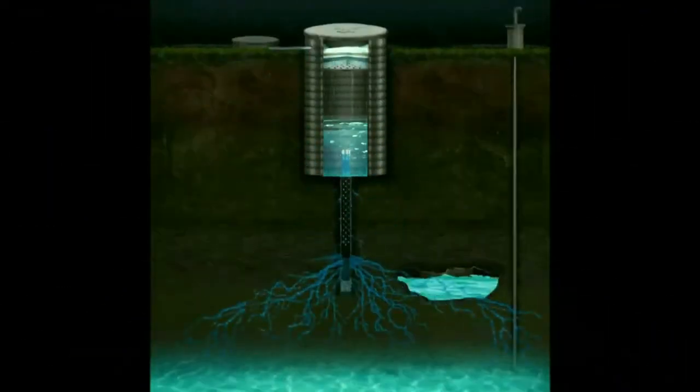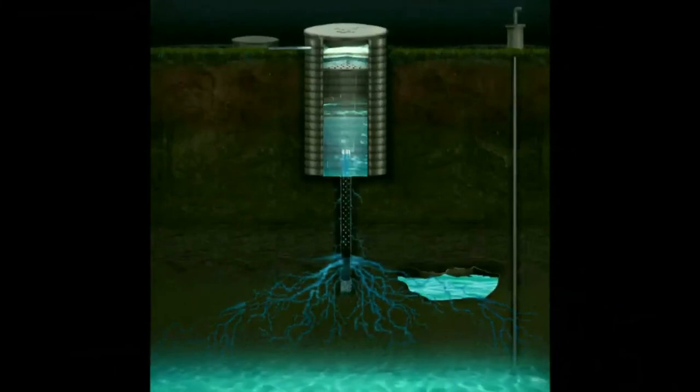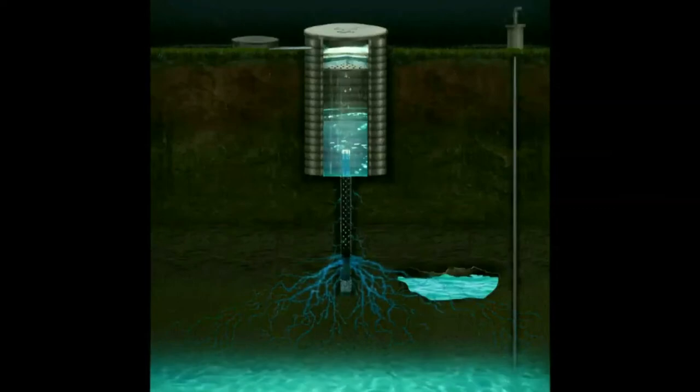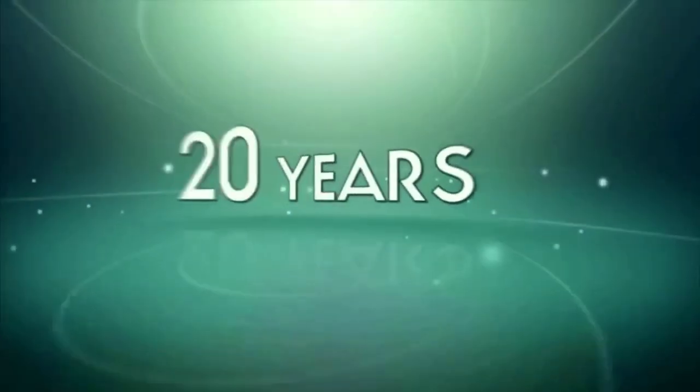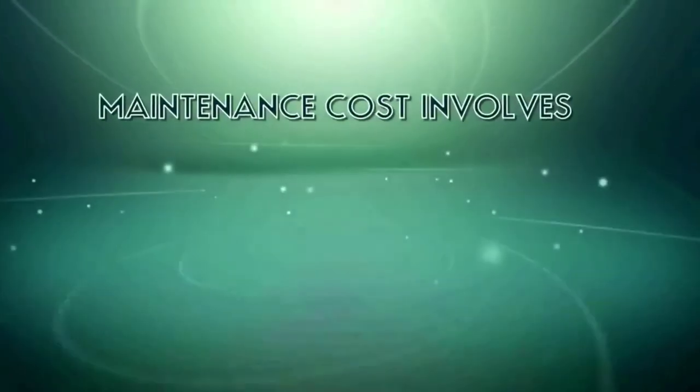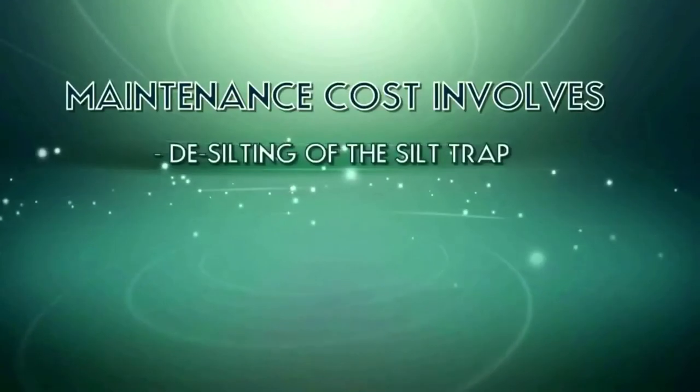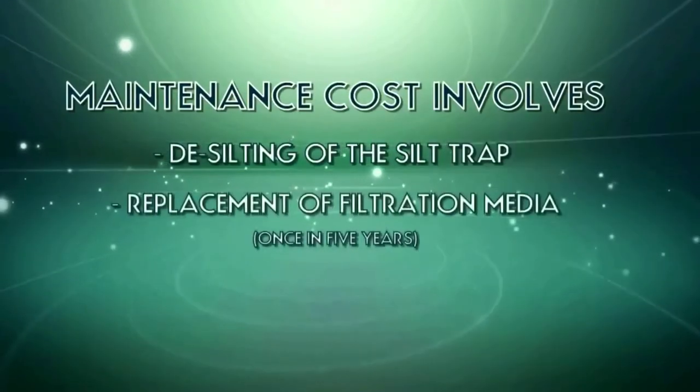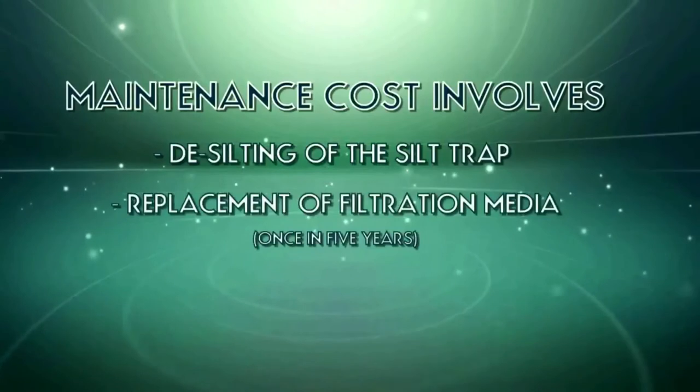Farmland V-wire technology does not employ any moving parts. The lifespan of the material is a minimum of 20 years. The maintenance cost involves desilting of the silt trap and replacement of filtration media once in 5 years.